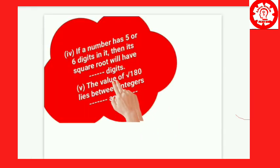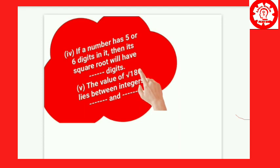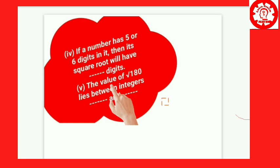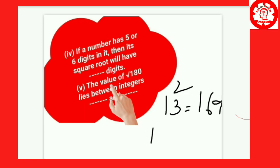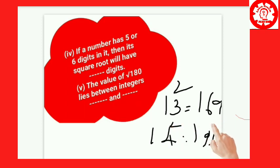Now for the original problem: the value of root 180 lies between integers dash and dash. We need to find the nearest perfect squares before and after 180. The nearest square is 13 squared, which equals 169. And 14 squared equals 196. So root 180 lies between 13 and 14.